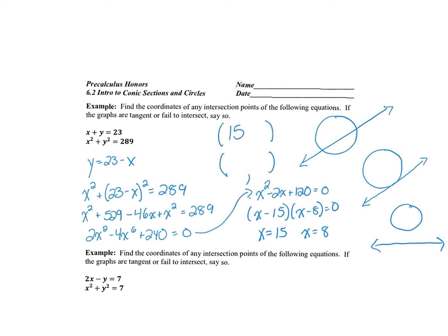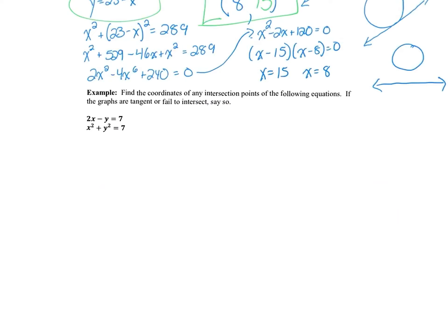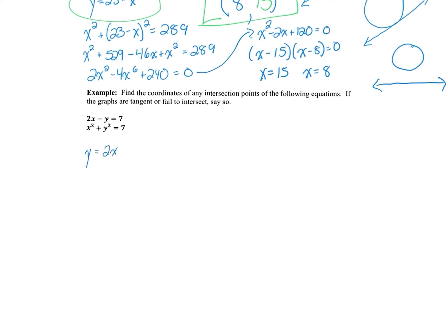To find the y-coordinates, plug each x-value back into y = 23 − x. When x = 15, y = 8; when x = 8, y = 15. So the two points of intersection are (15, 8) and (8, 15), meaning the line x + y = 23 is a secant of this circle. For the next example, use substitution again: isolate y from the first equation to get y = 2x − 7.